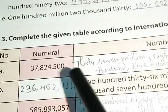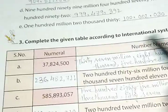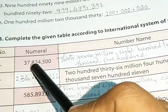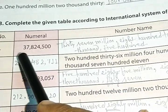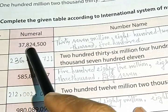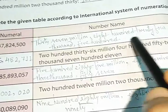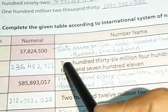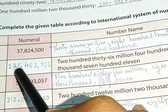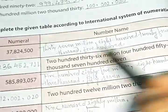Next, complete the given table according to international system of numeration. So, there are numerals and you have to write in word form. Already, I have done. You will follow the video. I will discuss one only. Like, 37,824,500. You have to write in word form. And next one, there is in word form. You have to transfer it into numerical. 236 million, 452 thousand, 711. So, in this way, you have to do this.